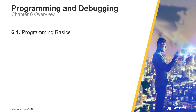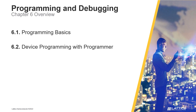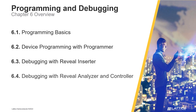In the first section, Programming Basics, we will review the general flow for programming a device using Radiant. In section two, Device Programming with Programmer, we will discuss Radiant's Programmer tool. In the third section, Debugging with Reveal Inserter, we will introduce Radiant's Reveal Inserter tool and discuss how it can be used to add debug cores to a design.